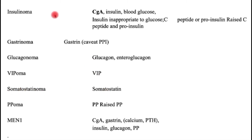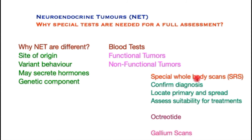These tests are very special and their assay requires experience and a high level of expertise. In terms of scans, apart from the conventional CT and MRI scans which are hugely useful, neuroendocrine tumors also benefit from SRS-based scans.